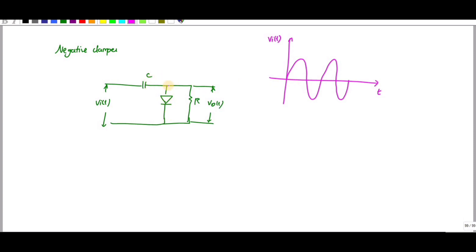When the diode conducts, the output is short-circuited, so the output voltage V_out is equal to zero, or approximately 0.7V. So during the positive cycle, V_out is zero.